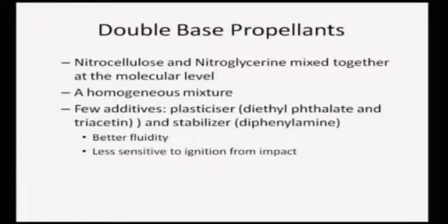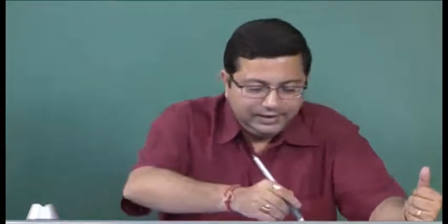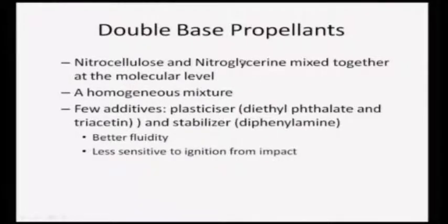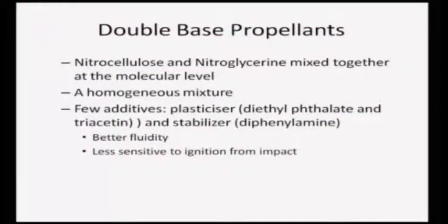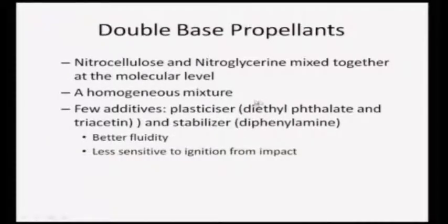Double base propellants are typically nitrocellulose or nitroglycerin mixed together at the molecular level - one is the fuel, the other is the oxidizer, mixed at molecular level creating a homogeneous mixture. When you mix at the molecular level you need additives: a plasticizer, typically diethyl phthalate and triacetin, which acts like a binding agent to keep them together. A stabilizer like diphenylamine is also used to control the burning rate.